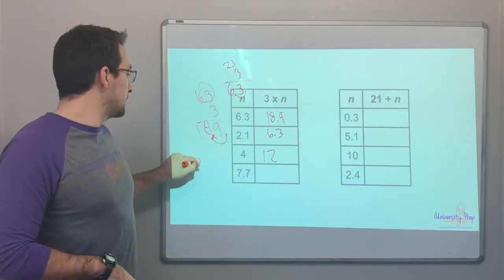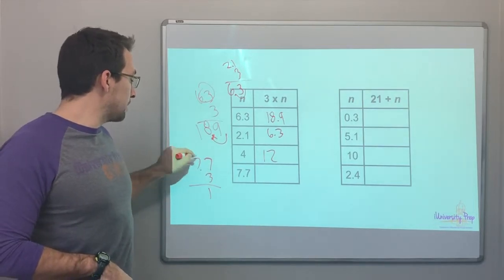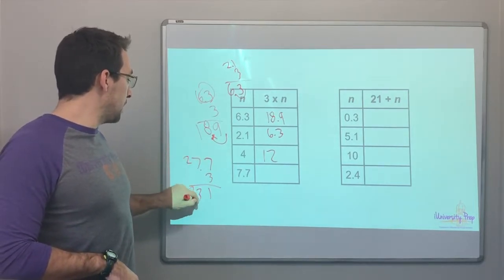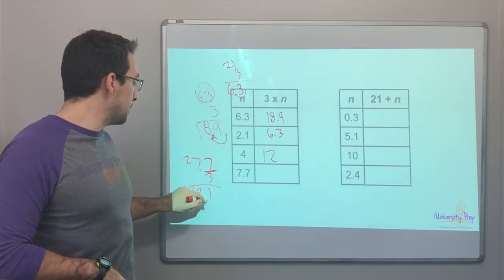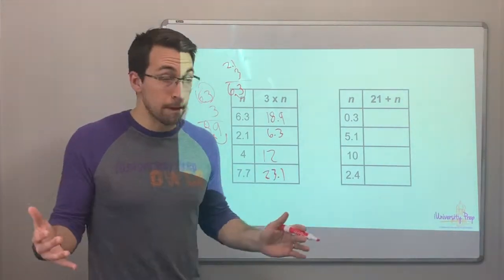7.7 times 3 is 21. 7 times 3 is 21. Plus 2 is 23. And there is one decimal place. So, 23.1. All right.